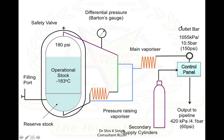At the outlet bar, the pressure is 1055 kPa or 10.5 bar or 150 psi. From the control panel, we can also have secondary supply cylinders from the manifold room when excess demand is not met. The output to the pipeline is usually lowered further from 10.5 bar or 150 psi down to 60 psi, 420 kPa, or approximately 4 bar.